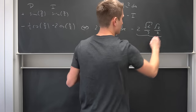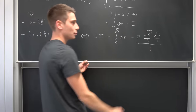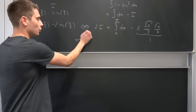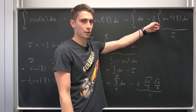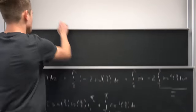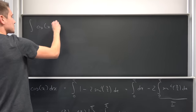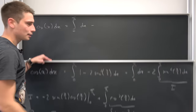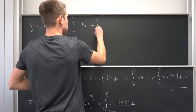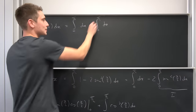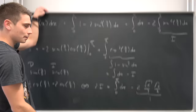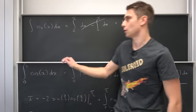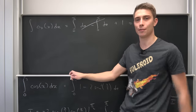Evaluating the boundary term: at pi/2 we get -2·sin(pi/4)·cos(pi/4) = -2·(√2/2)·(√2/2) = -1; at 0 it's 0. So 2I = -1 + pi/2. But plugging back: ∫₀^{pi/2} cos(x) dx = pi/2 - 2I = pi/2 - (-1 + pi/2) = 1. The integral is 1, verified again using the double angle technique.